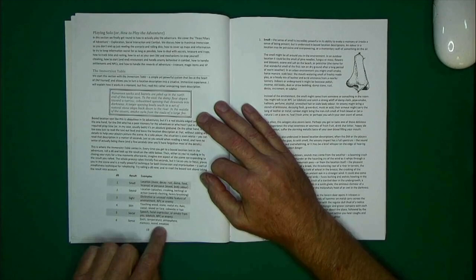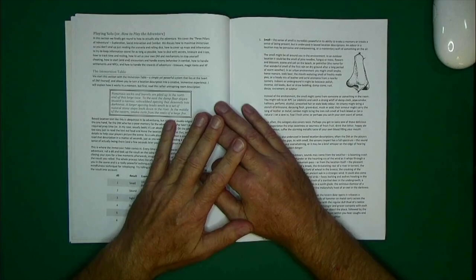Where you just roll a d6, you find one of the senses, either smell, sound, sight, skin, social, or senses. Like your sixth sense, or the atmosphere, or the mood, the emotion. And you just focus on that.